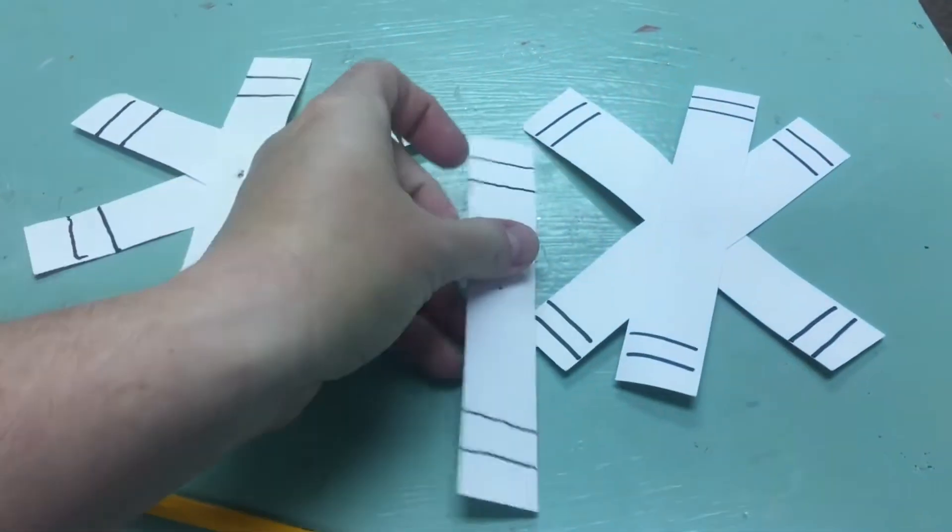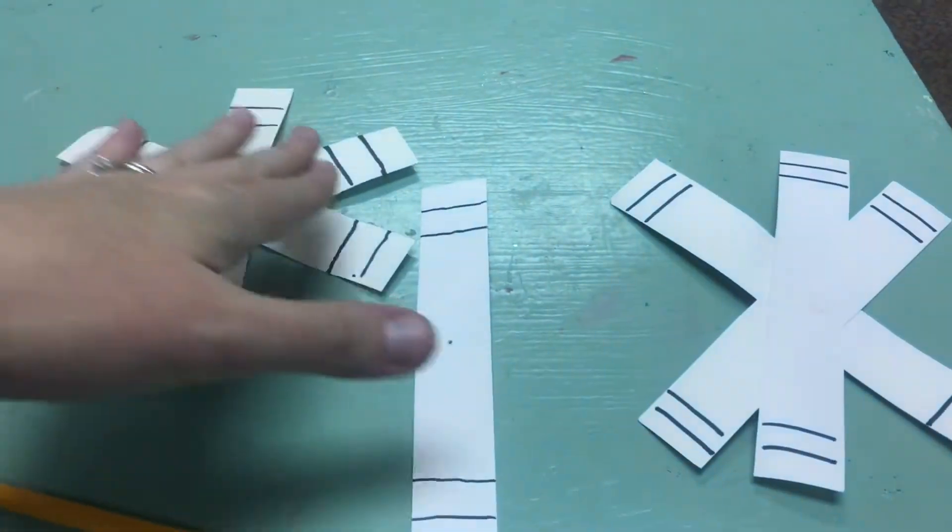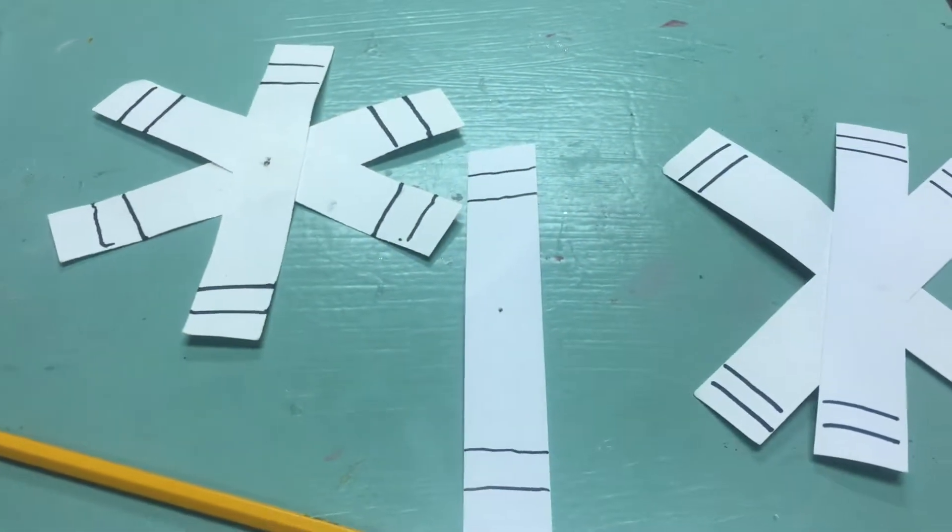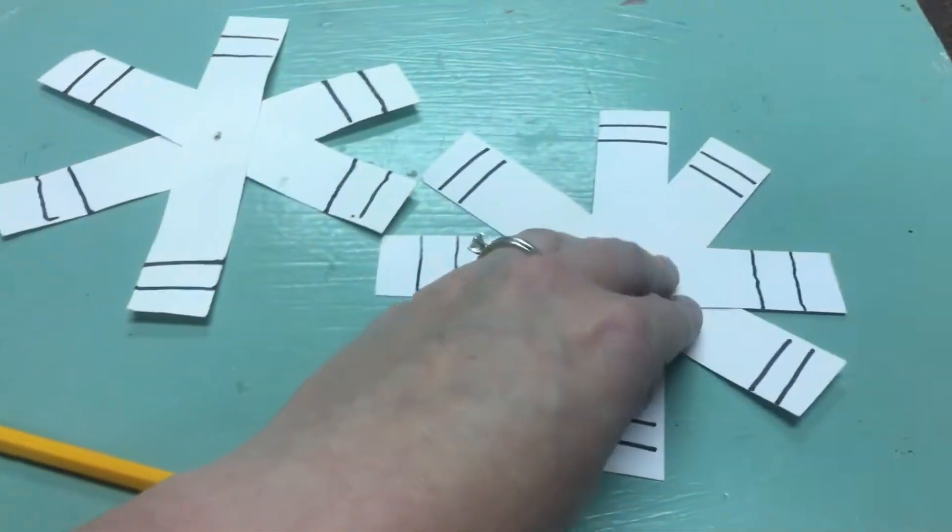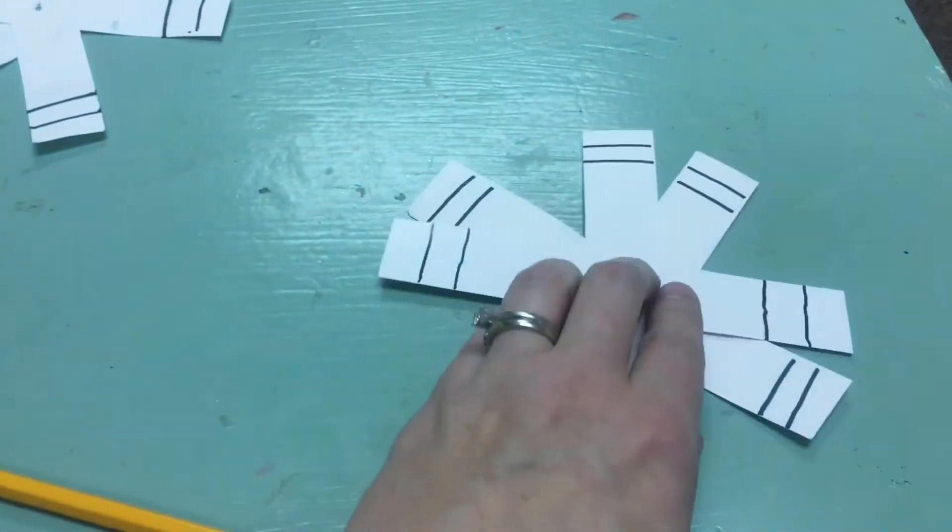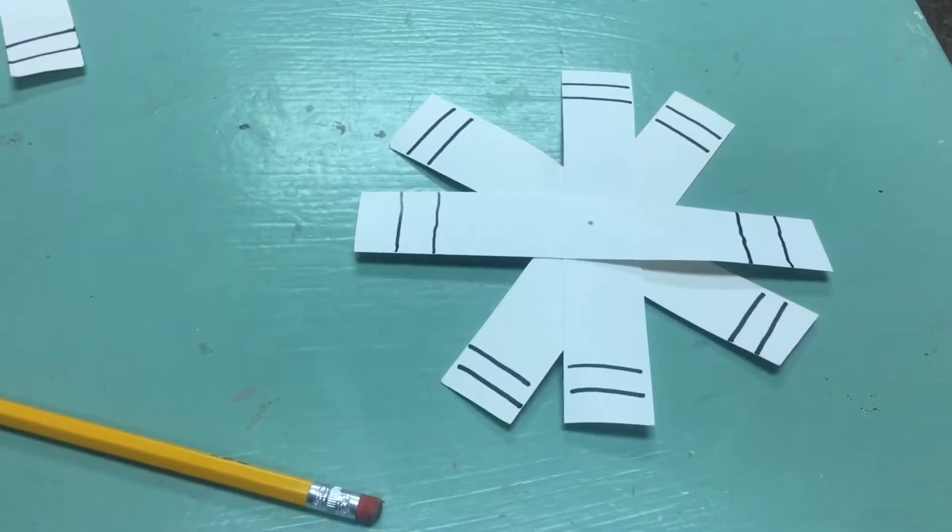They can line them all up and draw the lines across with a ruler, and then we will have glue sticks, and we will glue them together in the shape like this of a snowflake.